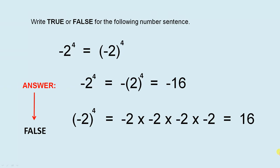Write true or false for the following number sentence: minus two to the power of four equals minus two to the power of four. Now, is that true or false? Let's have a look. Let's take this section first. So minus two to the power of four. That's exactly the same as minus, with the two in the brackets, or in the grouping symbols, to the power of four. This two is the only thing raised to the power of four. The negative sign is not raised to the power of four. Hence, this one here is minus 16.